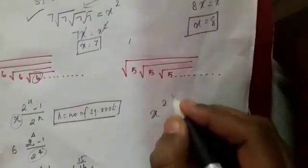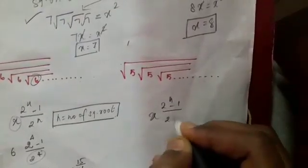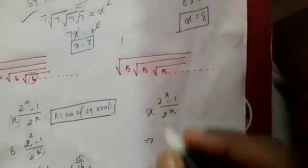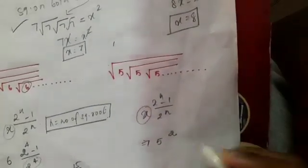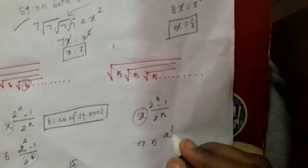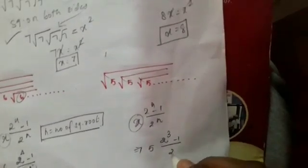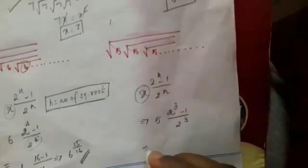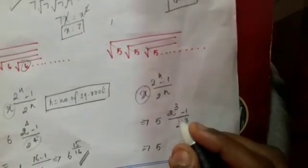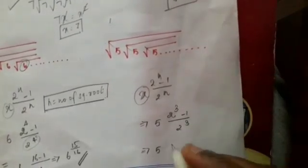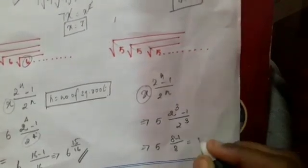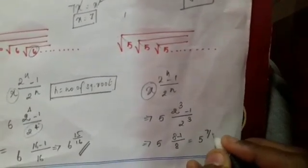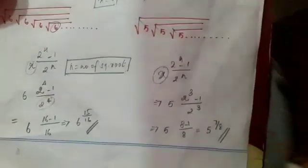Using the formula x to the power of (2^n minus 1) by 2^n: here x equals 5 and n equals 3 — that is 1, 2, 3 roots. So 5 to the power of (2^3 minus 1) by 2^3 equals 5 to the power of 7 over 8. This is the value of the answer.